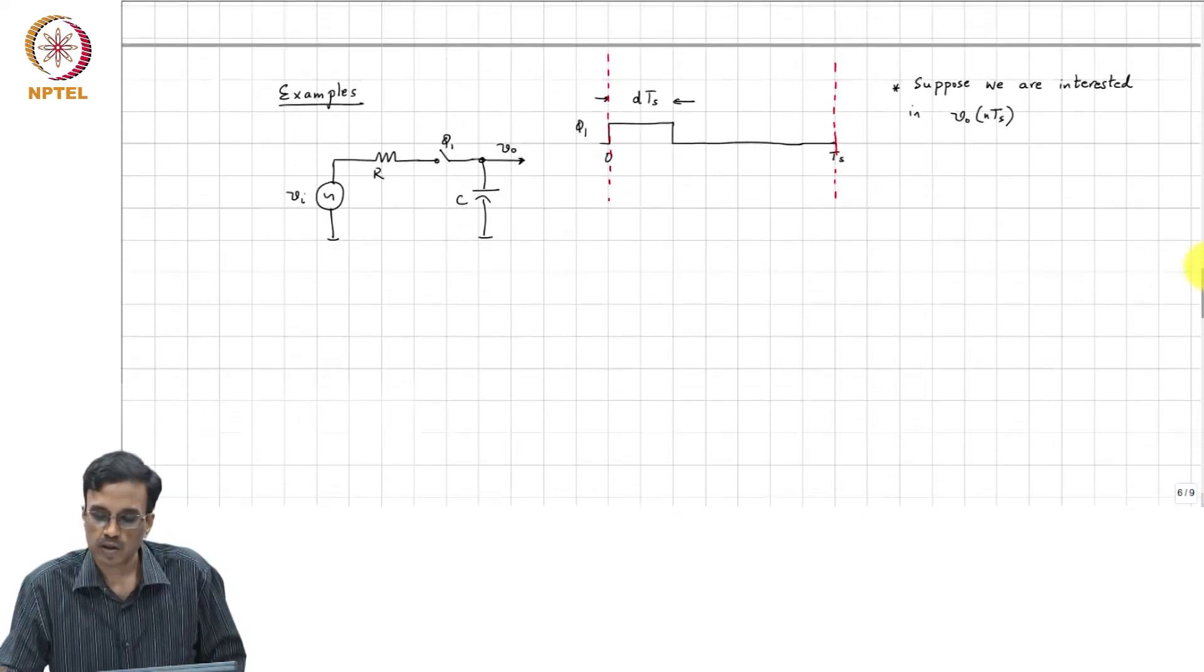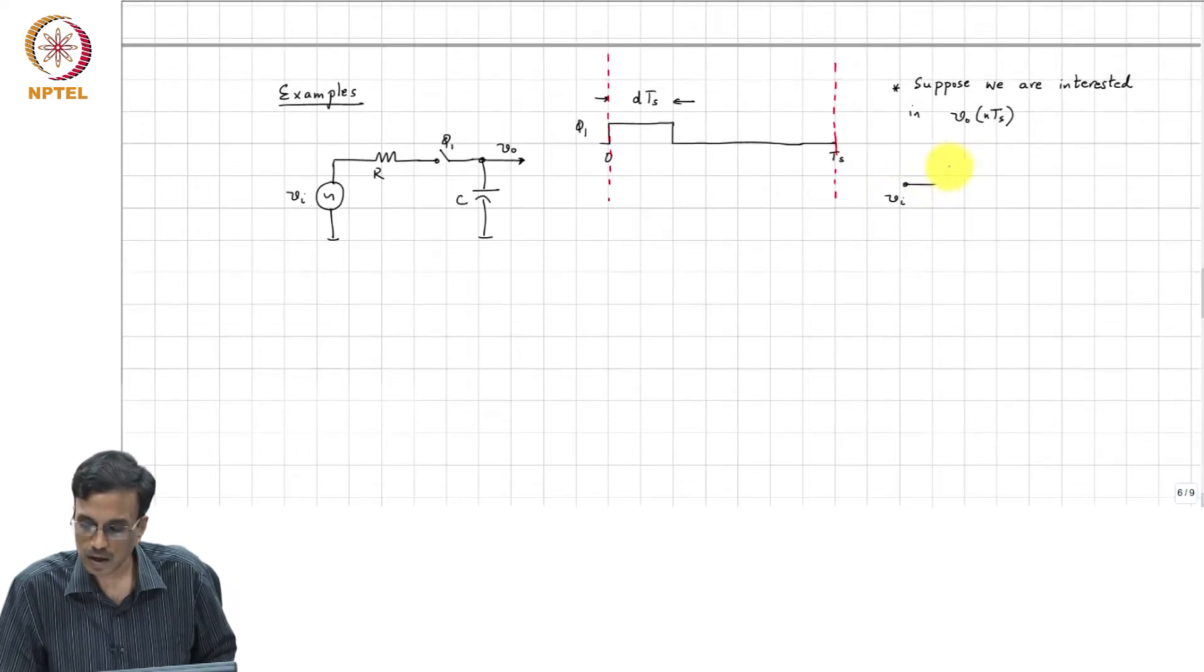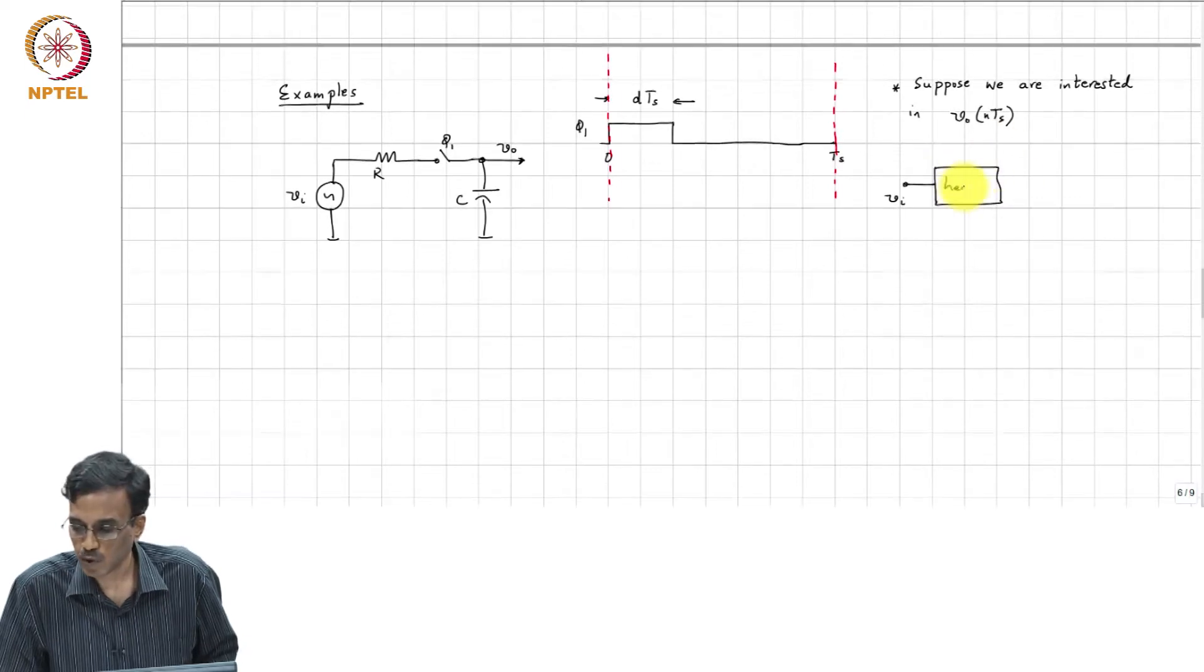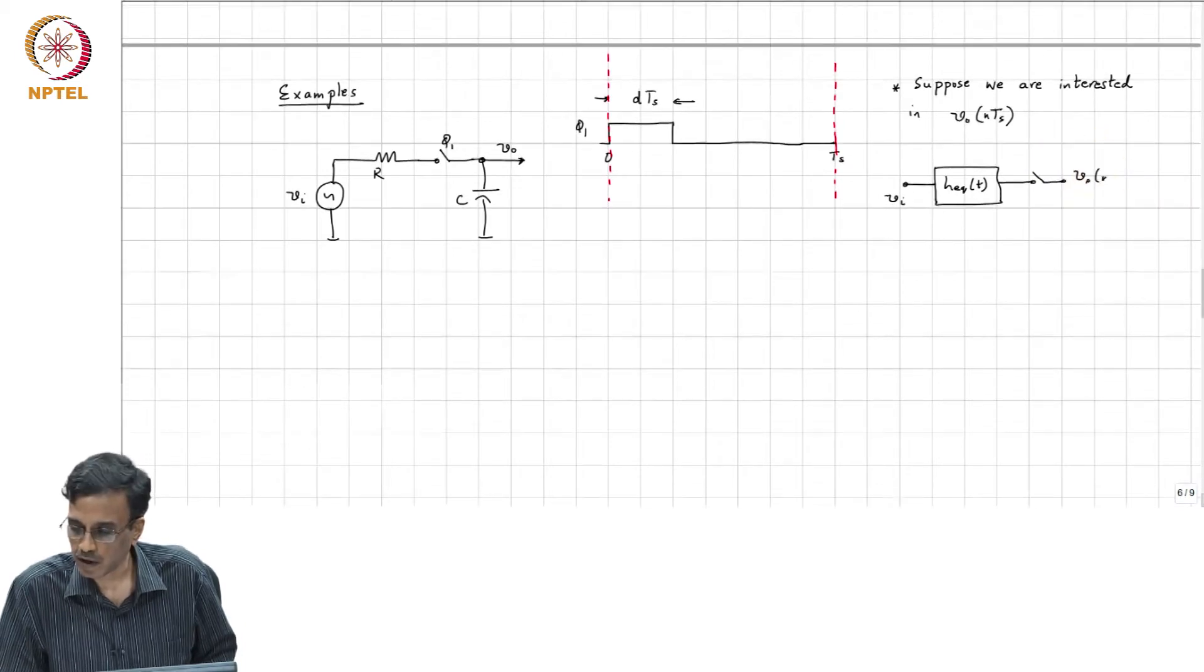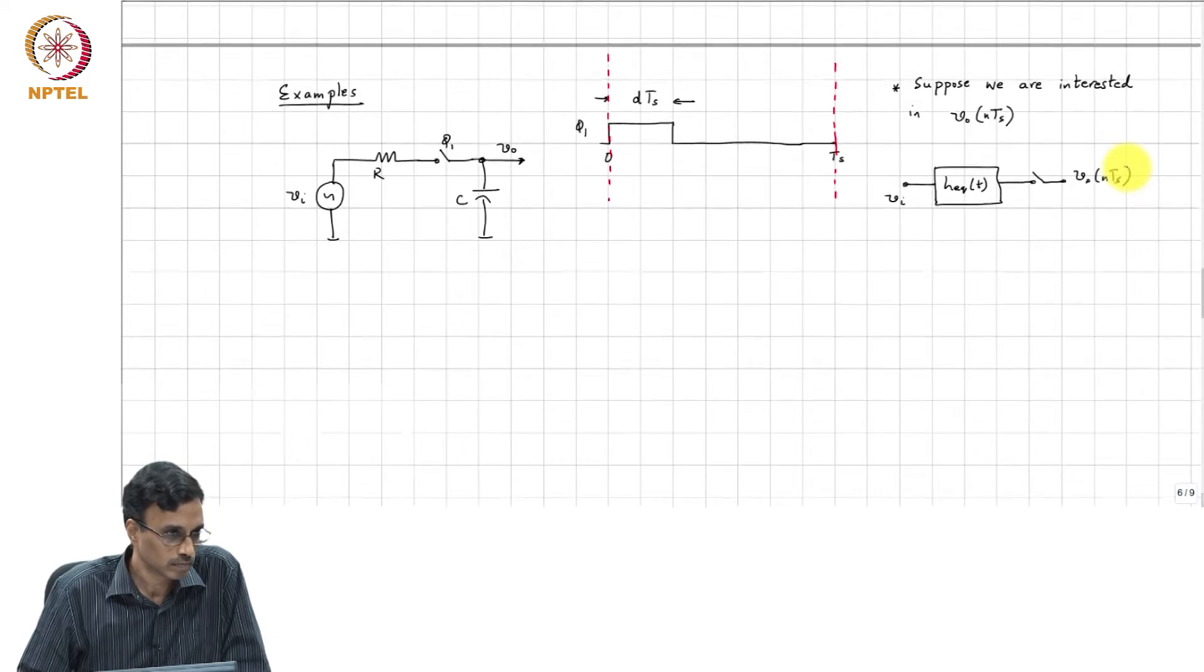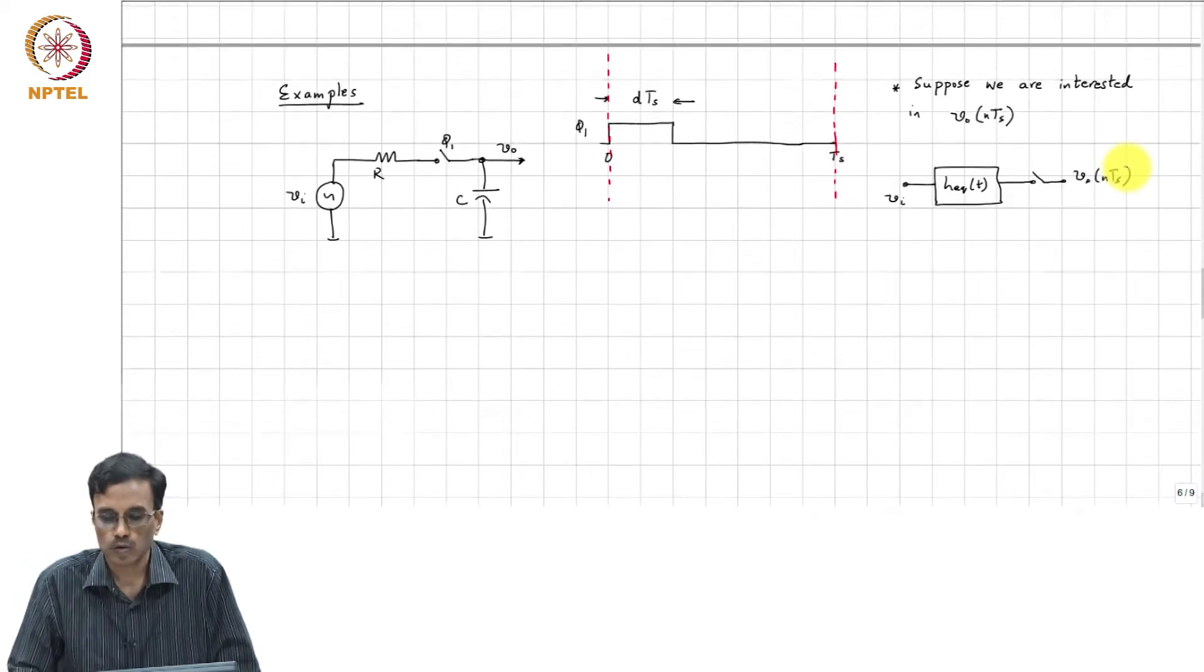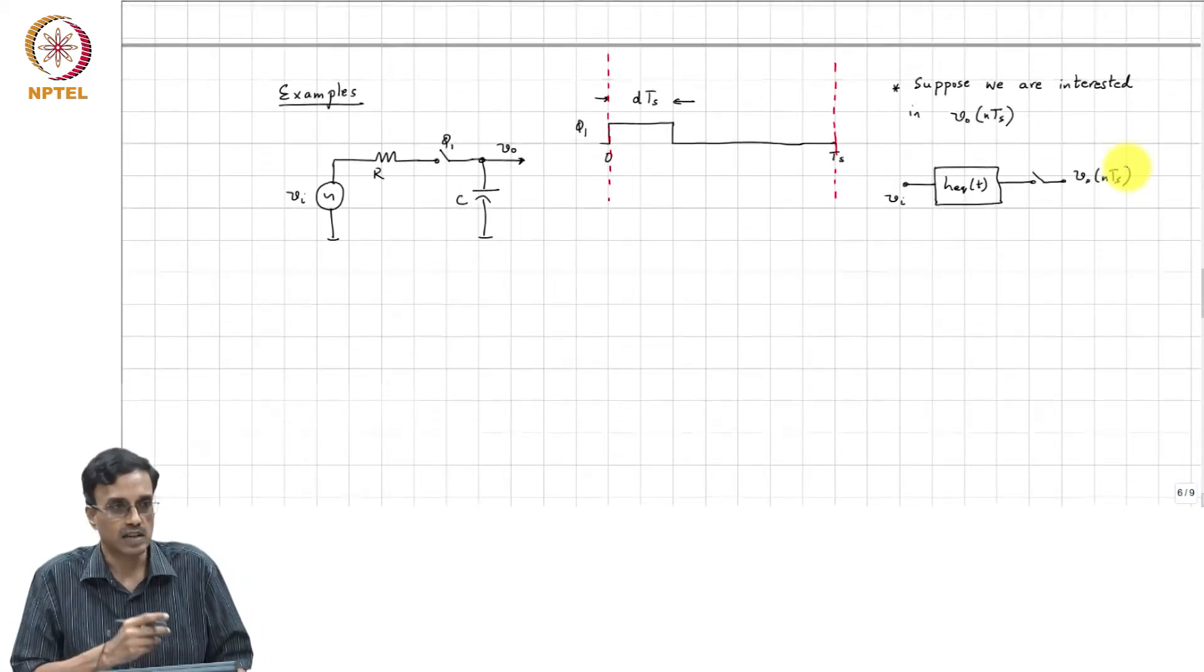So, what do we do? We need to find, in other words, what we are trying to do is, we have Vi. There is some H equivalent of T, the output of which is sampled. And this output is T out of Nt. How do we get H equivalent of T?